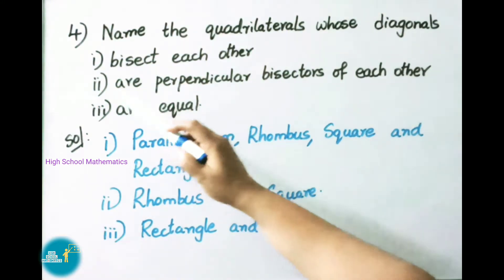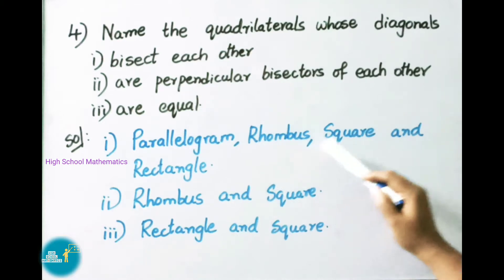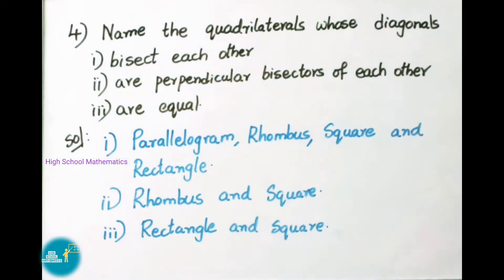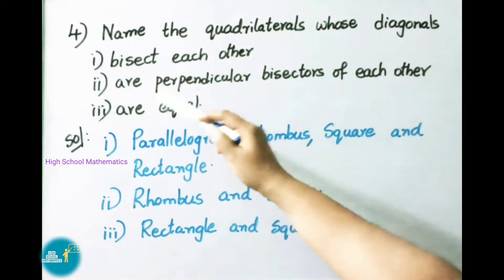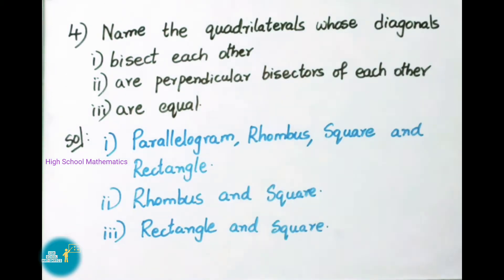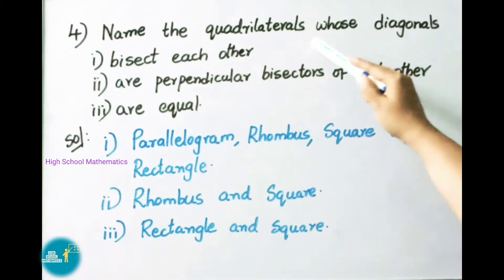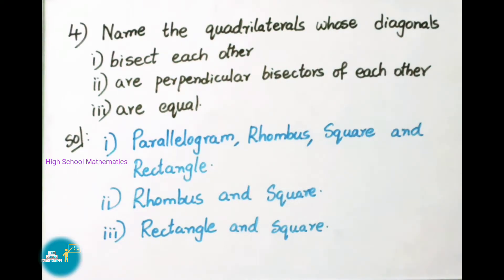Question number 4: Name the quadrilaterals whose diagonals bisect each other — parallelogram, rhombus, square and rectangle. Name the quadrilaterals whose diagonals are perpendicular bisectors of each other — rhombus and square. Name the quadrilaterals whose diagonals are equal — rectangle and square.